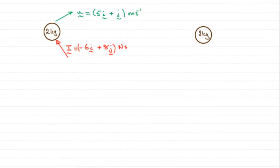For this question, I've drawn a quick sketch of the particle of mass 2 kilograms. We're told that it receives an impulse, which I've called I, equal to -6i + 8j newton-seconds, and it initially was moving with a velocity of 5i + j meters per second, which I've called u. Our job is to find the kinetic energy of the particle after the impulse.